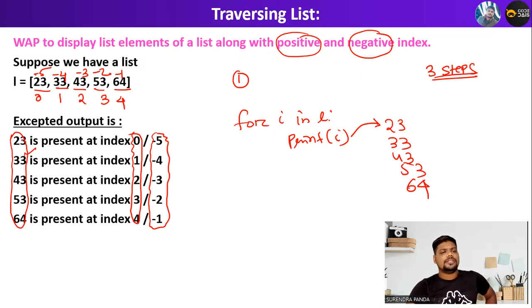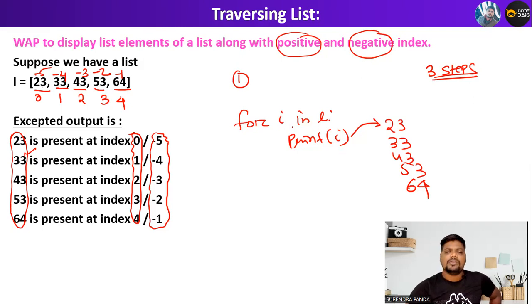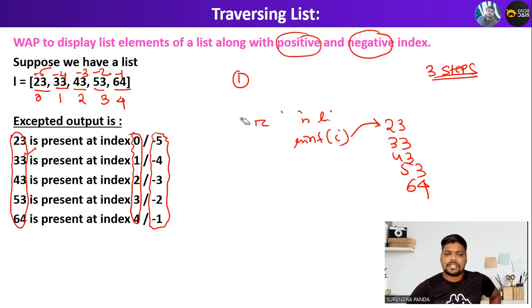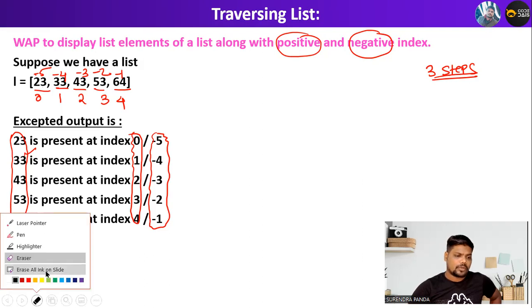But the problem with this approach is that you can display the values, but you cannot display the index — 0, 1, 2, 3, 4. You cannot display the index at all. That is the index problem. So that's why we will not follow this particular approach, and we will go with one more approach.